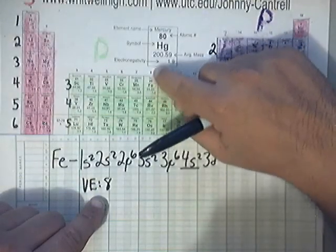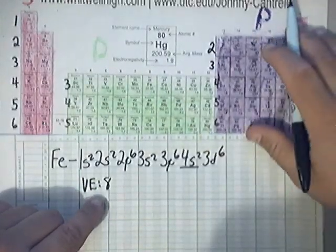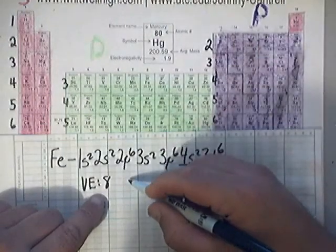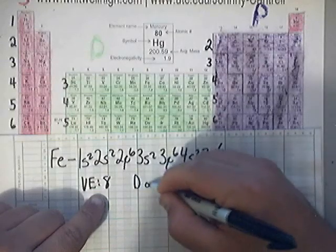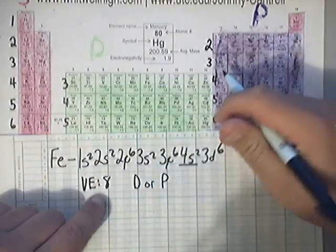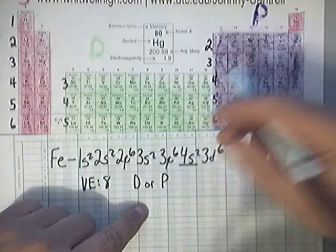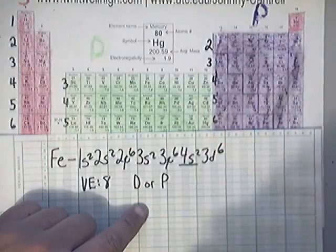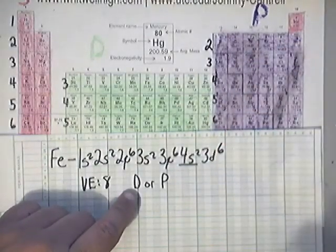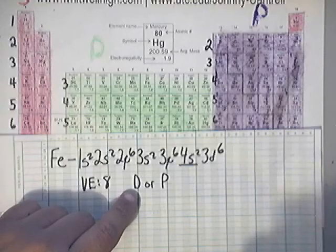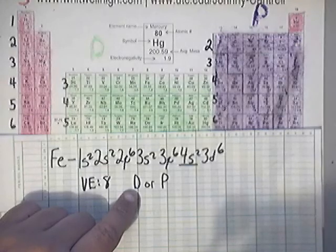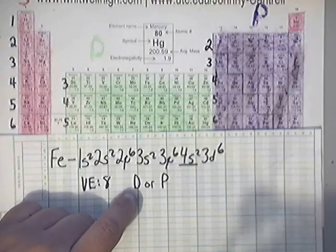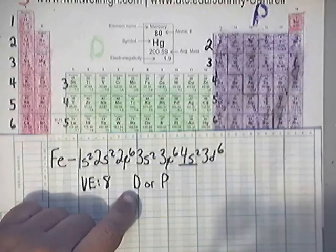Now paramagnetic or diamagnetic. Paramagnetic or diamagnetic, basically it's like this. Diamagnetic is, let me think of the easiest way to tell you this without giving you a book definition, something that would make sense.